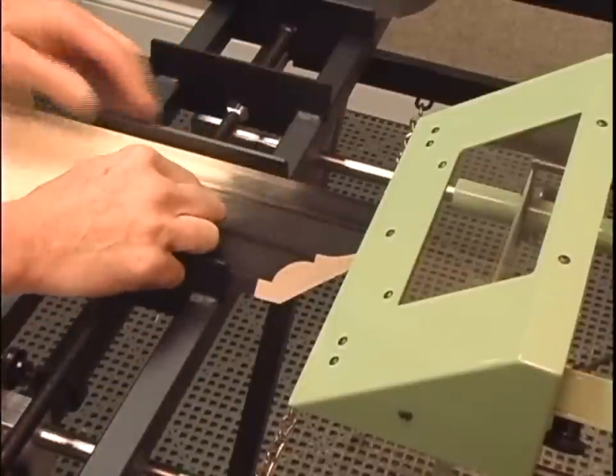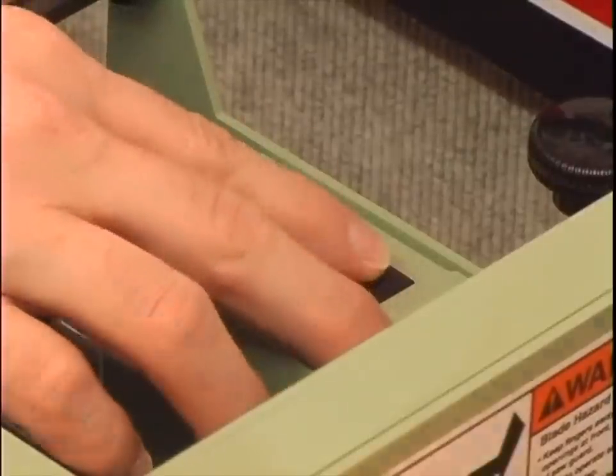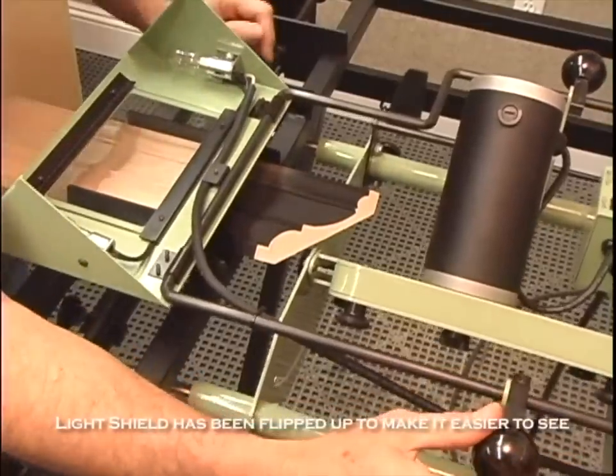With the piece secured, you can begin the cut. Turn on the light and make sure the blade is free from contacting the wood, then start the motor.